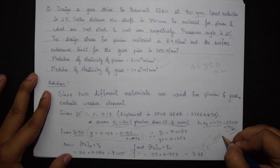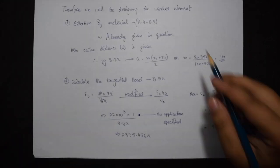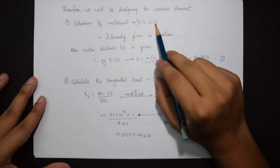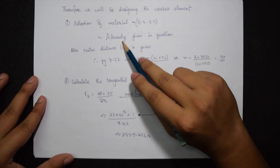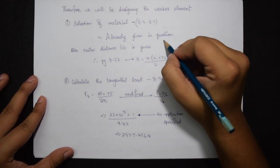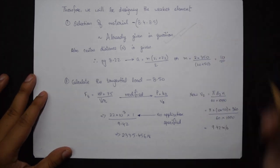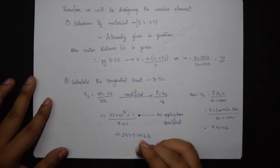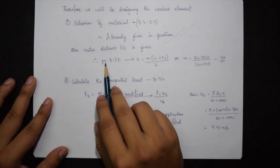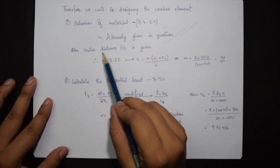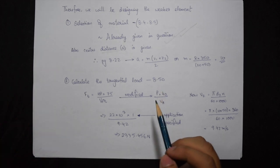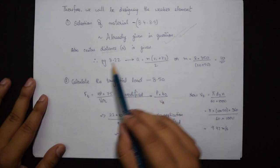Now directly jumping onto selection of material which is step number 1 given on page 8.4 and 8.5. But as we read in the question, the material for both things are given, so we'll just skip this step. Instead I also highlighted that the center distance was given.